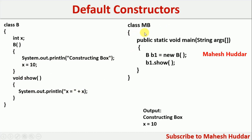In the main class MB, I have created an object of B called B1. Whenever I create this object, the constructor is called, so the message 'constructing box' will be displayed and the value of X is initialized to 10. With respect to B1, the value of X is now 10. When you call B1.show, the value of X — which is 10 — will be displayed. Since we are not passing any parameter at the time of creating the object, the default constructor is called.